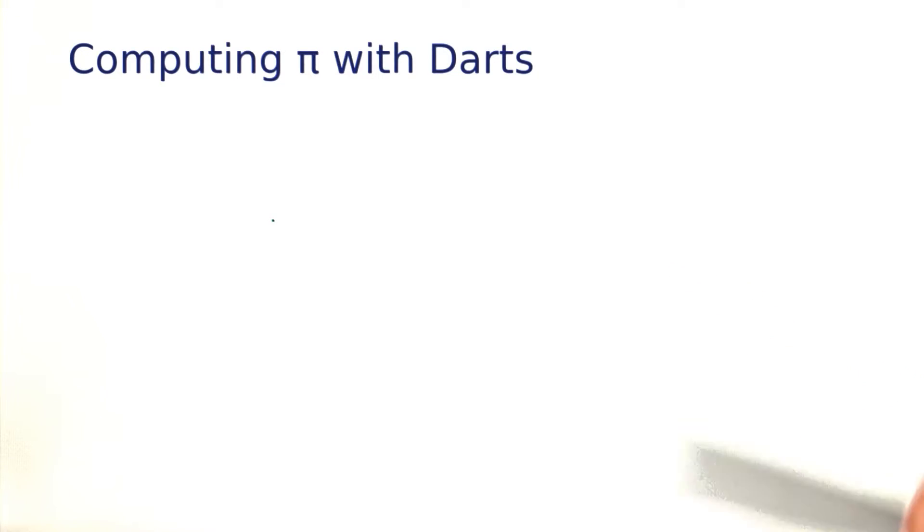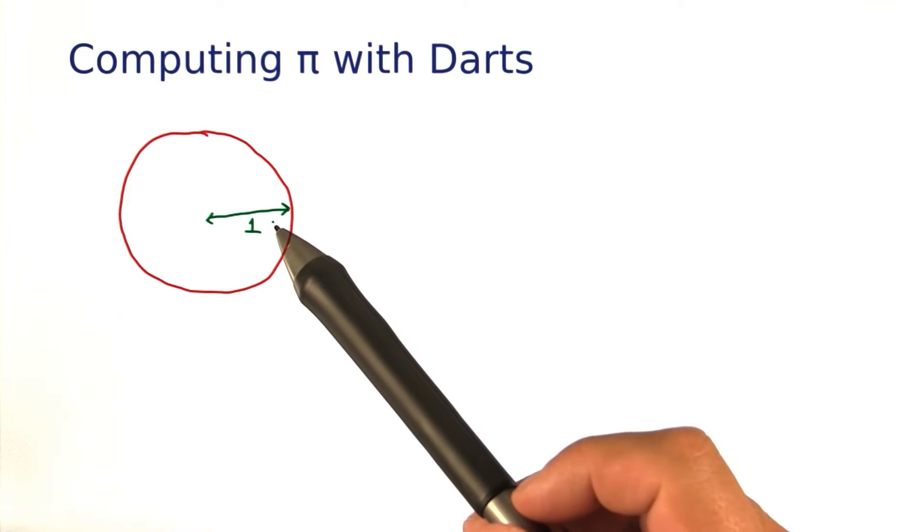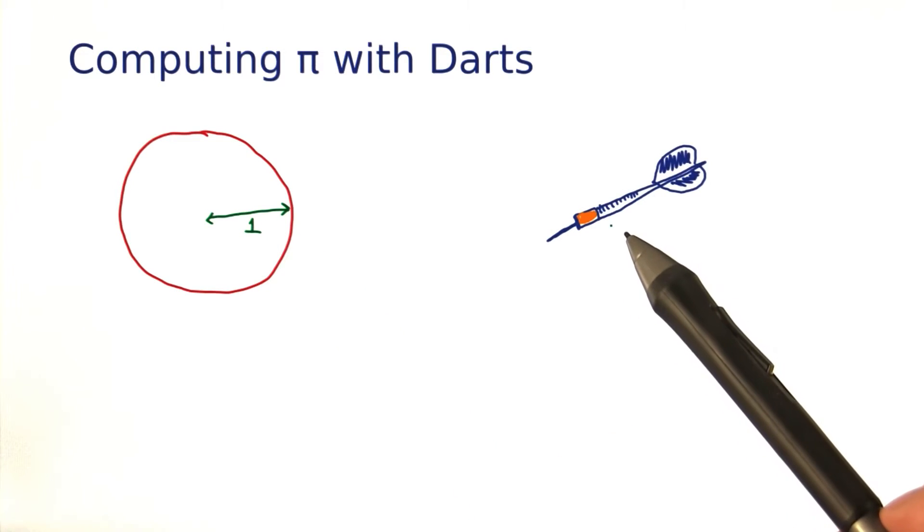Let me show you an interesting application of random numbers. You know what pi is? It's the area of a circle with radius 1. There are formulas for computing pi to any desired precision, but that's no fun. We'll compute pi by shooting darts.